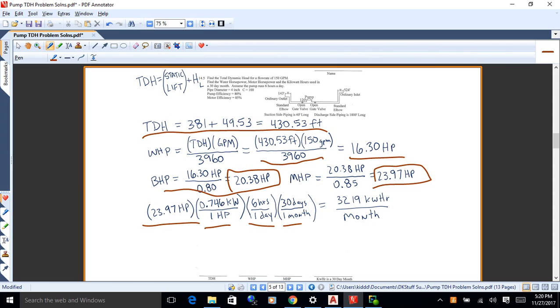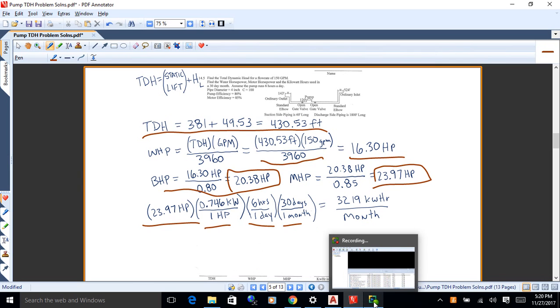And then if you know the cost of power per kilowatt hour, you could find the cost per month to run the pump. So that's just a little run through of 14.5.